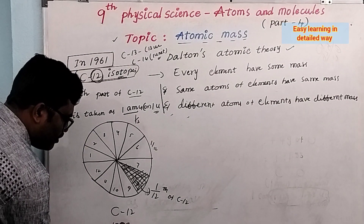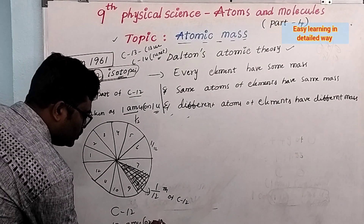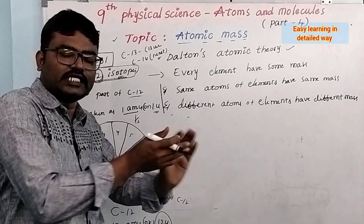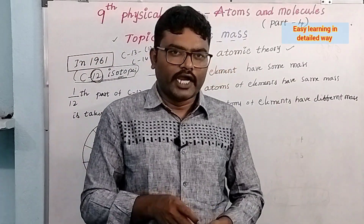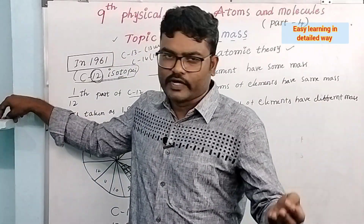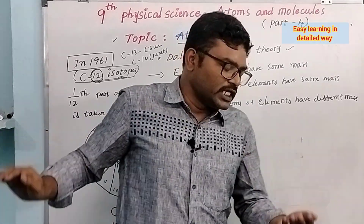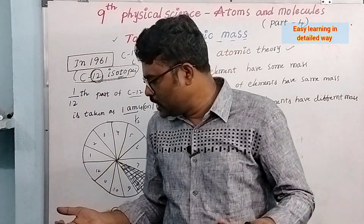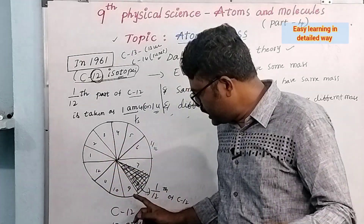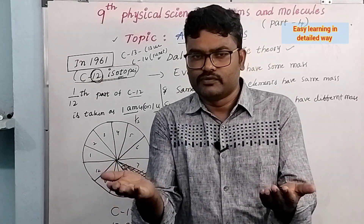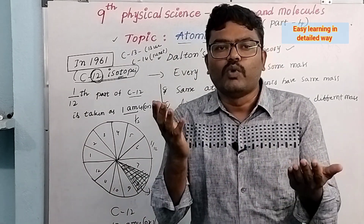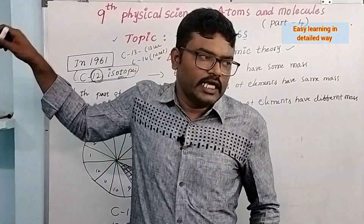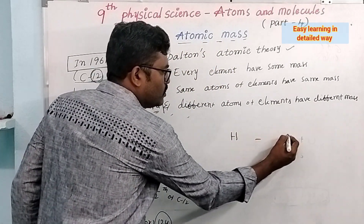The atomic mass of carbon-12 is 12 atomic mass units or 12 unified masses. So the atomic mass of carbon is 12U. By comparison, for example, if we take a hydrogen atom and compare it with carbon-12, one hydrogen atom is exactly equal to one 1/12th part of carbon-12. That's why the atomic mass of hydrogen is 1U.